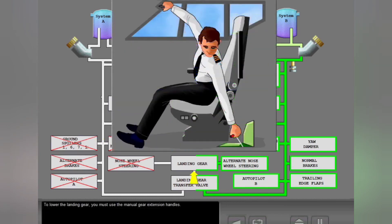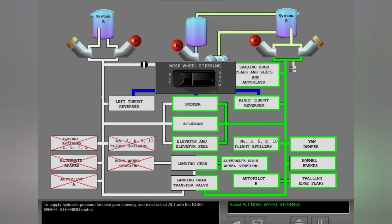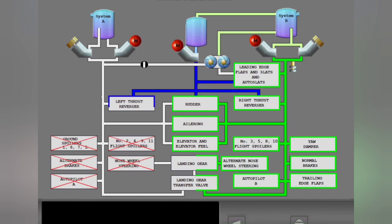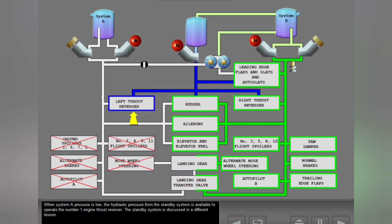To lower the landing gear, you must use the manual gear extension handles. To supply hydraulic pressure for nose gear steering, you must select alternate with the nose wheel steering switch. System B now supplies hydraulic pressure for nose wheel steering when the airplane is on the ground. When System A pressure is low, the hydraulic pressure from the standby system is available to operate the number one engine thrust reverser.